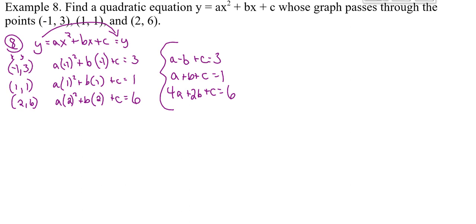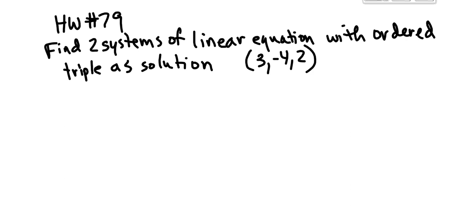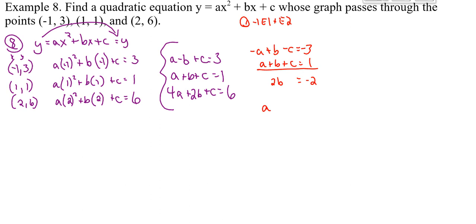So here's how I went about solving it. I took negative 1 times e1 and added e2. And when I did that, I got 2b equals negative 2. I rewrote my first equation, supplemented my middle equation with the new one, and left my third equation.